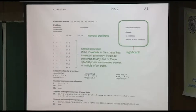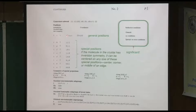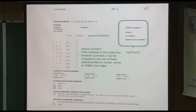If something resides exactly on an inversion center, you don't get the repetition — you can't invert something at half, half, half if it's exactly there. So we call that a special position. The reflection conditions are circled because they're very important. When you're looking at your data, which is a list of HKLs, sometimes you see what we call systematic absences — these are the key to determining the space group. In P1-bar there are no conditions, so you don't have any systematic absences at all.